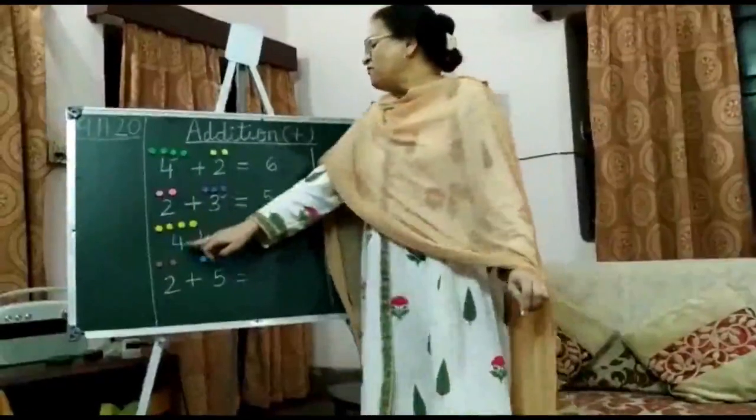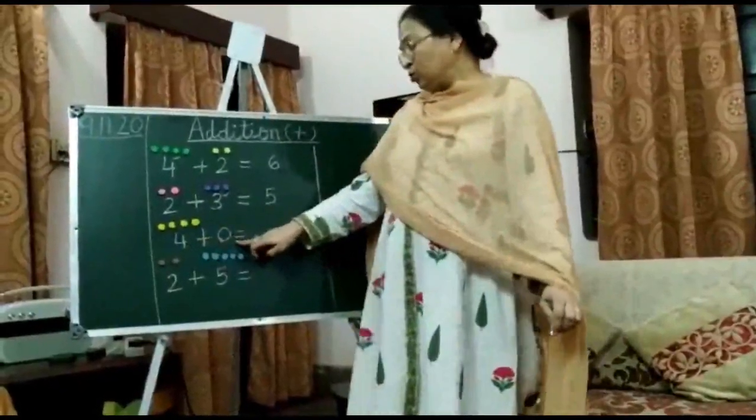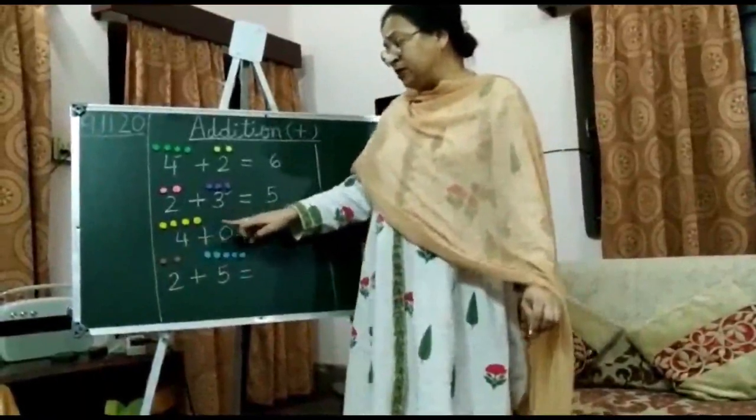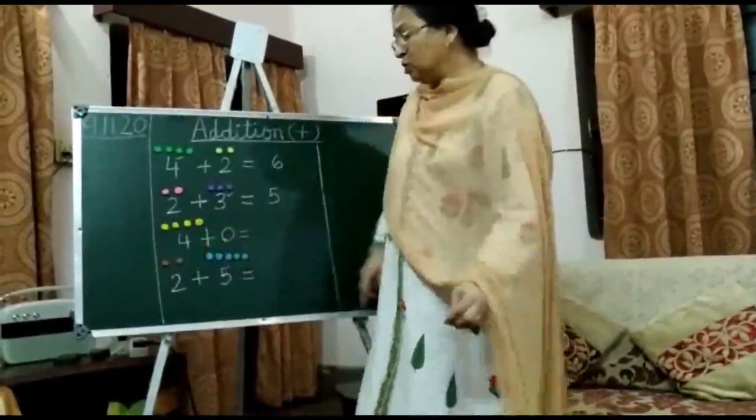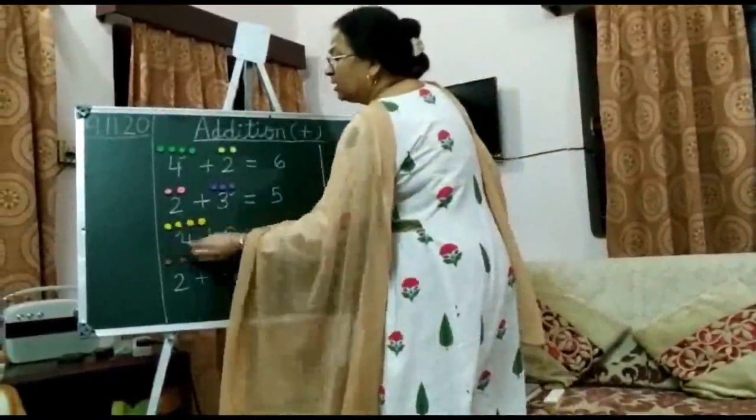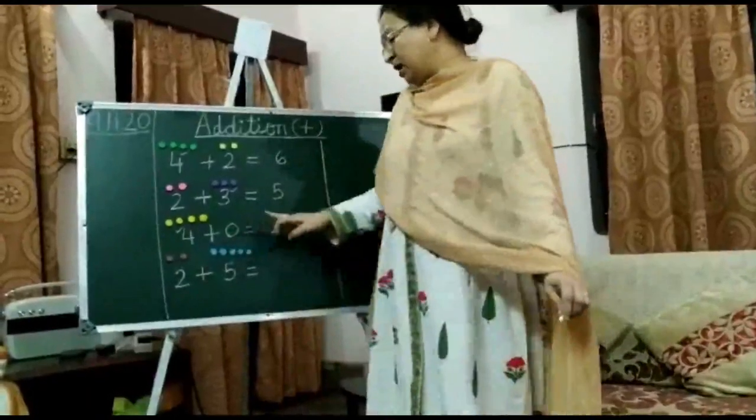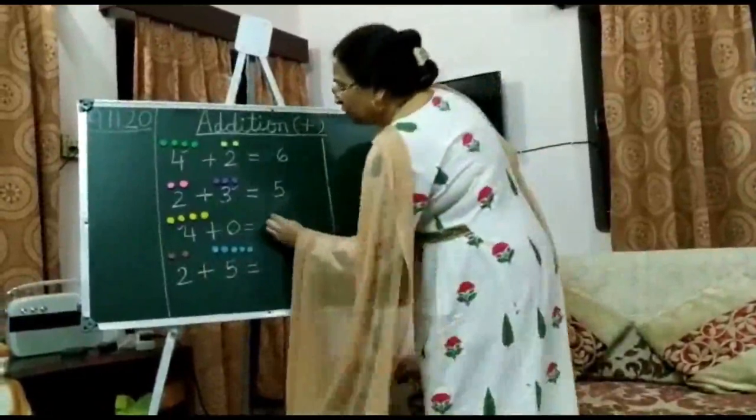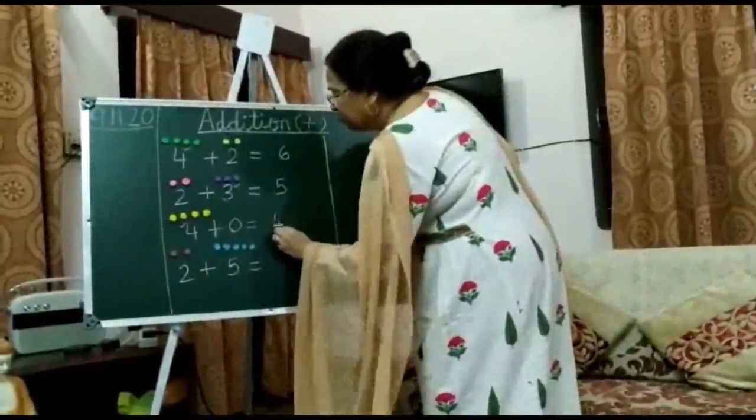Next, 4 plus 0. Because there are no pom-poms here, the bigger number is 4. We put a tick mark here, and since there is nothing to be added, the answer is 4.